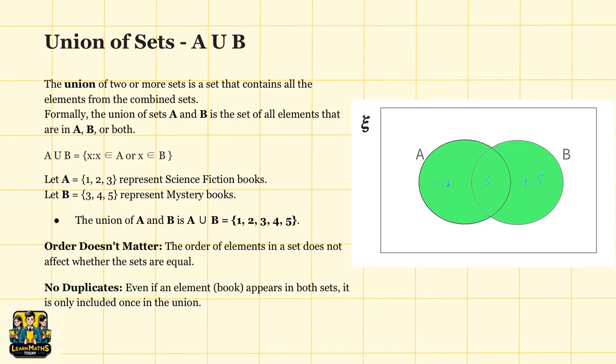This is also important to remember that in sets, order doesn't matter. Whether we write the element as 1, 2, 3, 4, 5 or 5, 4, 3, 2, 1, the sets are still equal because what matters is the collection of elements, not the sequence.